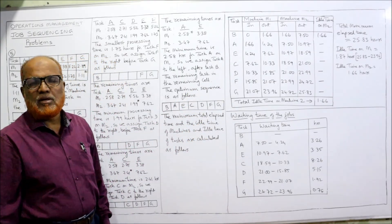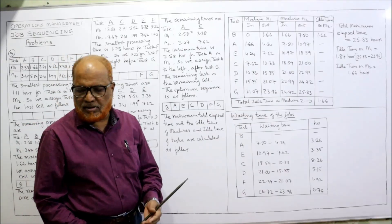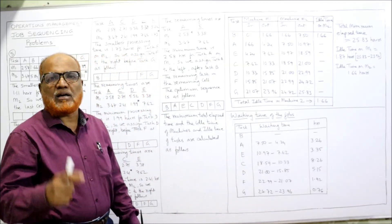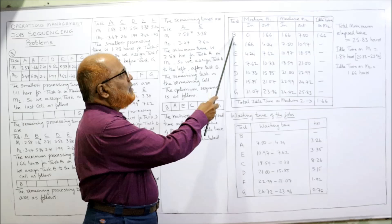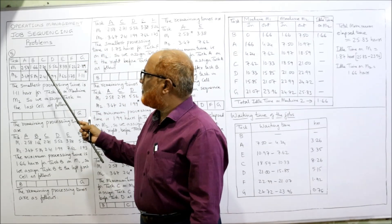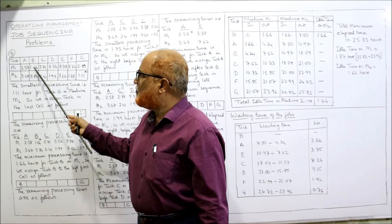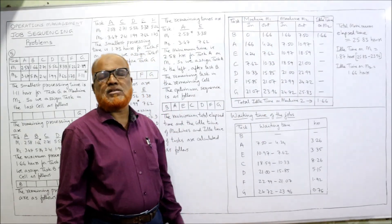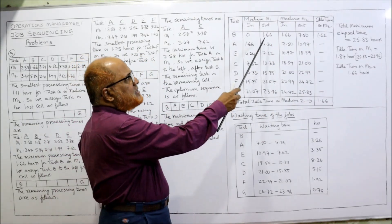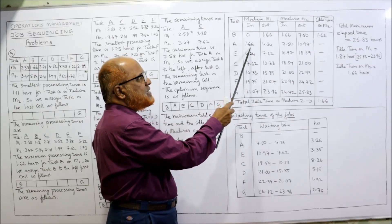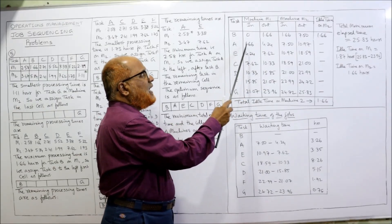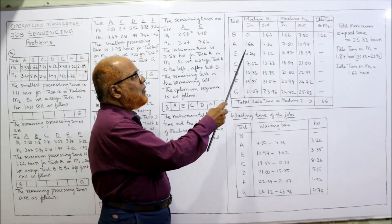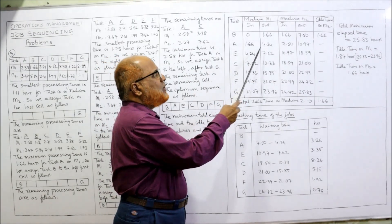The first job always starts at zero. Task B on M1 has processing time 1.66, so it starts at 0 and ends at 1.66. Immediately after, M1 starts job A. Task A on M1 is 2.58, so 1.66 + 2.58 = 4.24. M1 starts E at 4.24; E on M1 is 3.38, so 4.24 + 3.38 = 7.62.